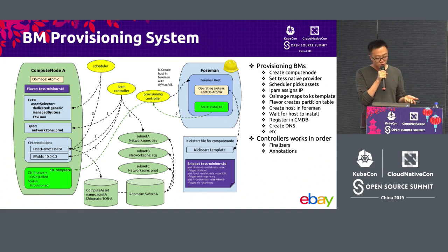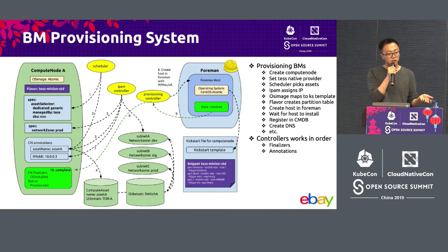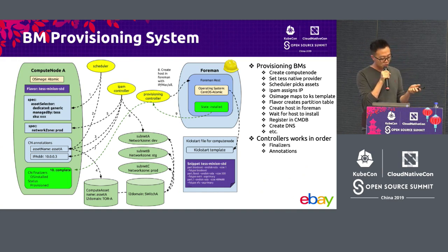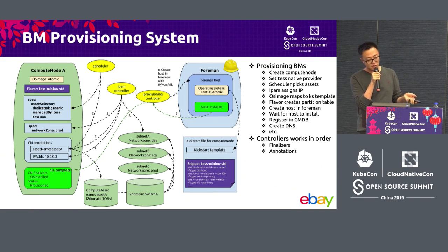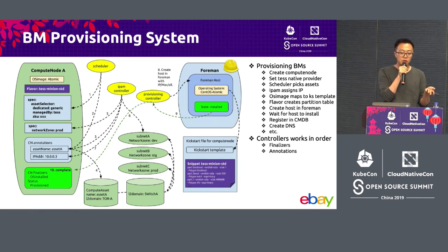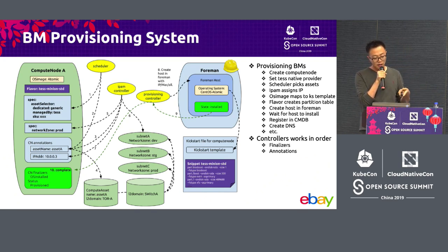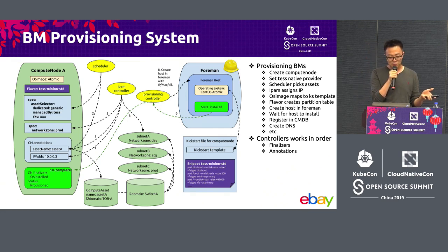Controllers work in order — they subscribe to different fields of the compute node objects. They also put finalizers into the compute node object so that when you delete the compute node, for example, the DNS controller will see its specific finalizer and remove DNS as well, IP allocation will release the IP, et cetera. So the whole provisioning system is completely declarative, and at each stage you can track the status from the compute node object.